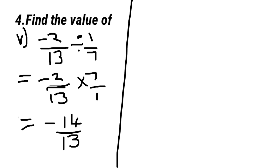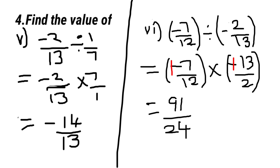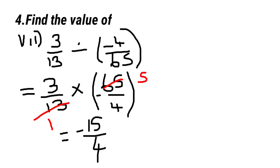Fifth sum: minus 2 by 13 divided by 1 by 7, equal to minus 14 by 13. Sixth sum: minus 7 by 12 divided by minus 2 by 13, we get the answer 91 by 24. Seventh and last sum: 3 by 13 divided by minus 4 by 65, and we get the answer minus 15 by 4.